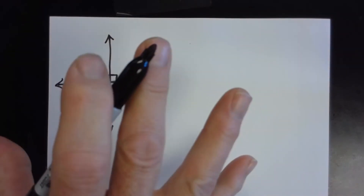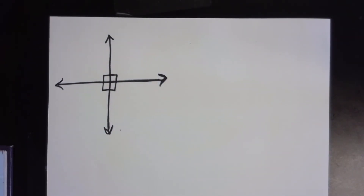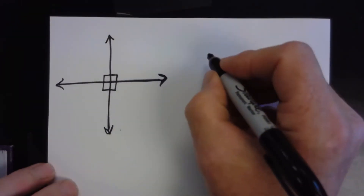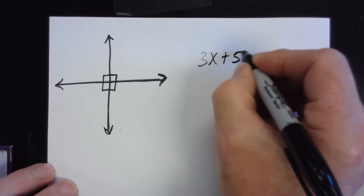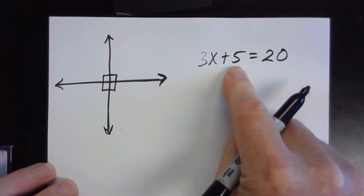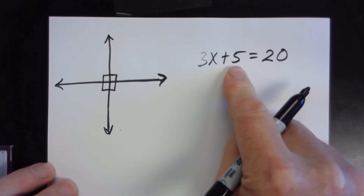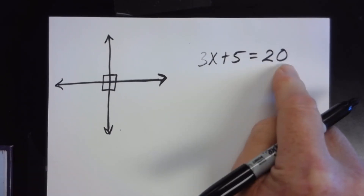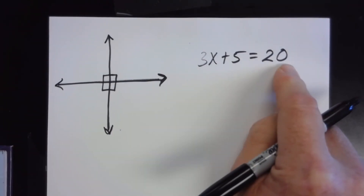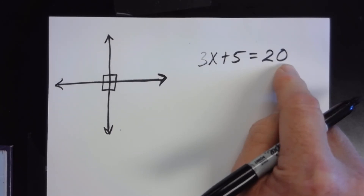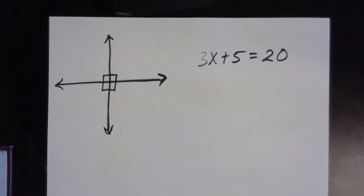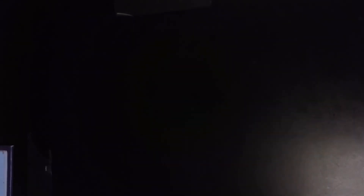That is the case for mathematical definitions and properties in general. For example: if two quantities are equal and I subtract the same value from both sides of the equal sign, then it will still be equal. The converse, inverse, and contrapositive of that are also all true. Now let's think about some that are not necessarily all true.